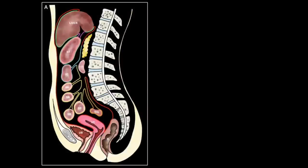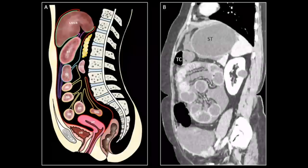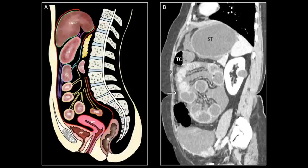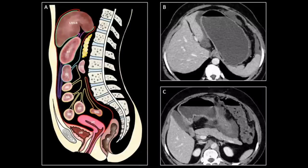From the greater curvature of the stomach, a peritoneal fold extends as a double layered sheet known as the greater omentum. It stretches in front of the small bowel loops only to eventually fold upon itself and attach to the transverse colon. On a sagittal CT section, the greater omentum can be identified as the fatty apron anterior to the stomach, transverse colon and the bowel loops. On axial sections, figures B and C, it can be distinguished due to its anterior location relative to the bowel loops and the rest of the peritoneal folds.